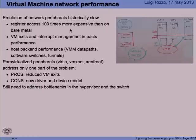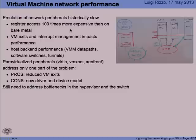These VM exits and similar things that happen on interrupt dispatching are very, very expensive — much more expensive than on a real machine. Accessing a register is probably 100 nanoseconds or a little more on a real machine, but on a virtual machine due to VM exits and further processing, you might spend anywhere between 5 and 10 microseconds on that single operation. There is a big gap in performance, especially when accessing devices, where you might have a lot of these accesses per packet.